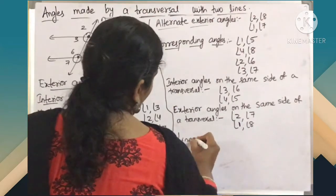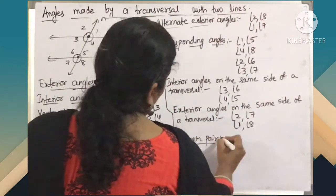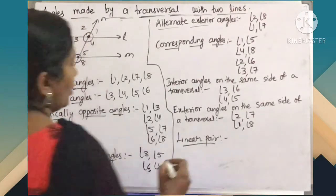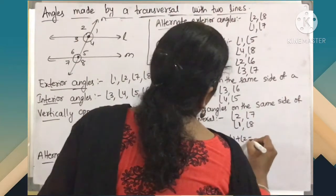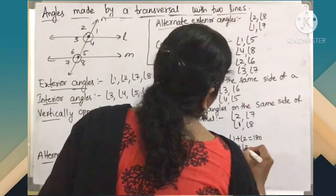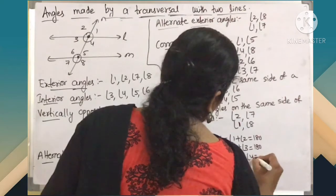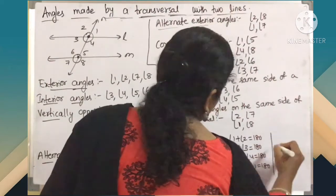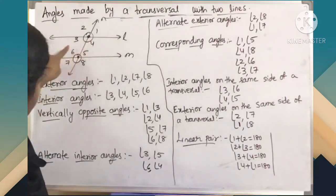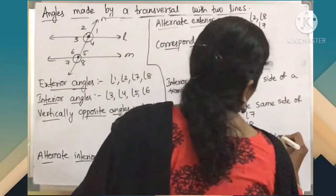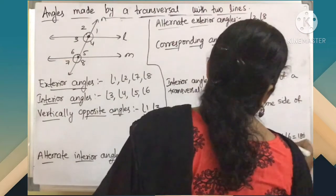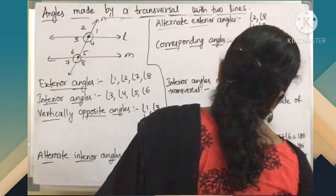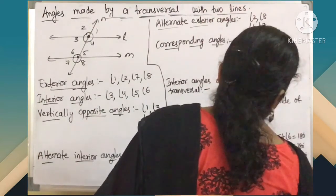Finally we are going to write linear pair. The sum of 2 adjacent angles is equal to 180 degrees. When considering angles 1, 2, 3, 4: angle 1 plus angle 2 equals 180, angle 2 plus angle 3 equals 180, angle 3 plus angle 4 equals 180, and angle 4 plus angle 1 equals 180. For angles 5, 6, 7, 8: angle 5 plus angle 6 equals 180, angle 6 plus angle 7 equals 180, angle 7 plus angle 8 equals 180, and angle 8 plus angle 5 equals 180. Whenever two lines intersect you get 4 pairs of linear pair.